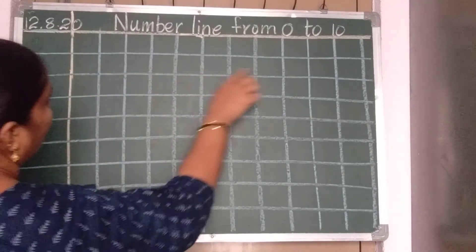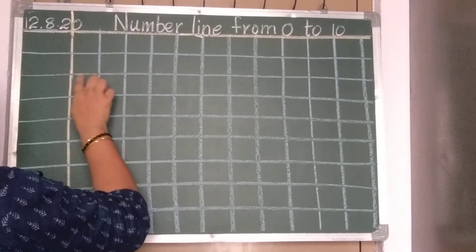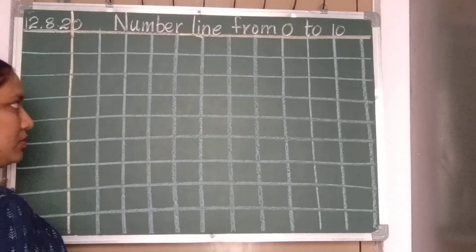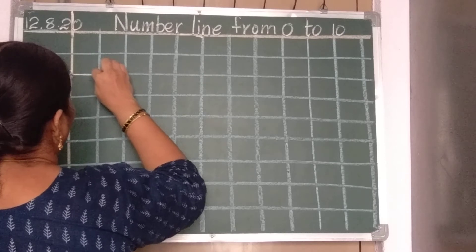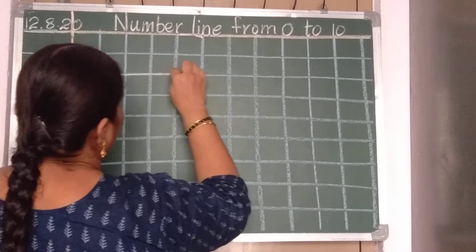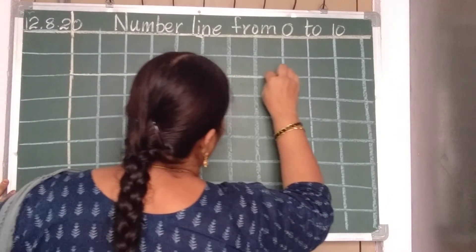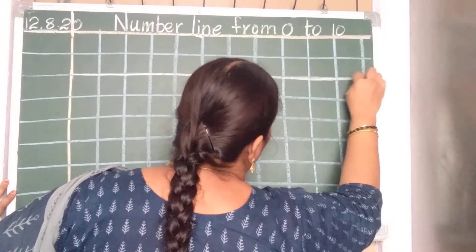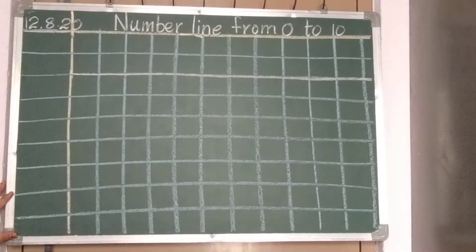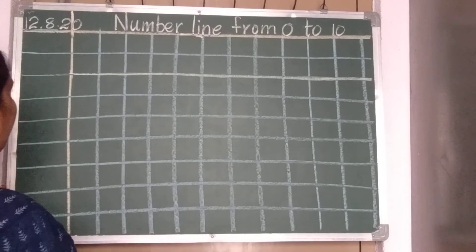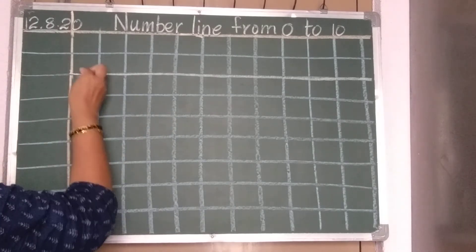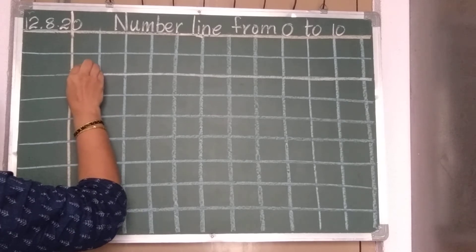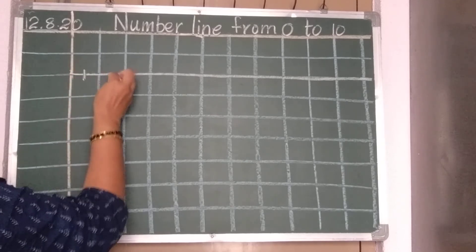Now see children, here we will draw the number line. Lines are there on your book. So on the line you should draw a line or take a scale. If you have a scale, the scale you can draw neatly.